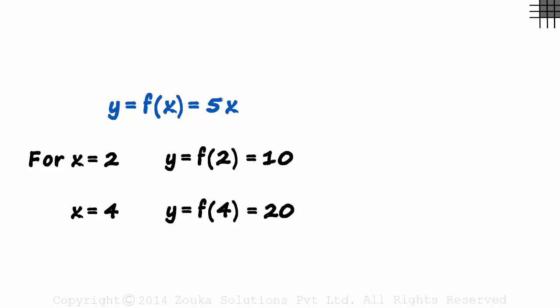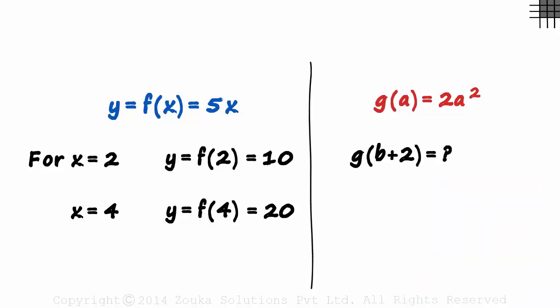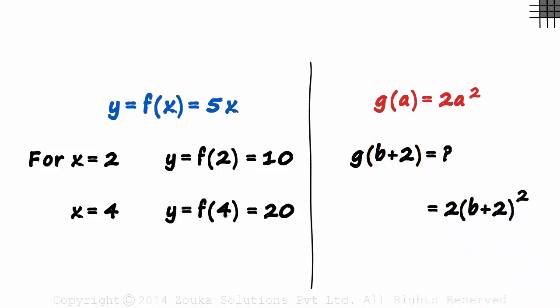Sometimes we might have a variable input. Look at this function. g of a is equal to 2a squared. What would be g of b plus 2? Easy! We just substitute b plus 2 in place of a. It will equal 2 times b plus 2 squared. All we really need to do in functions is substitute the input value and get the output.